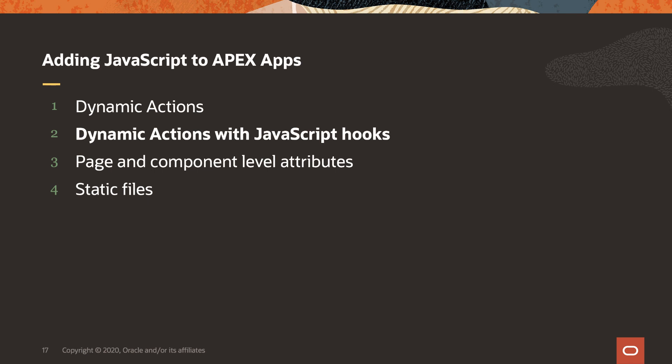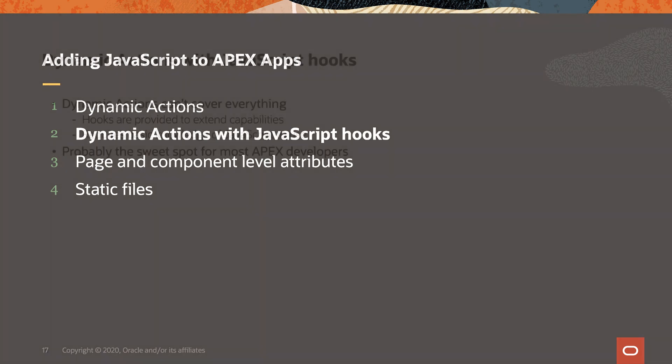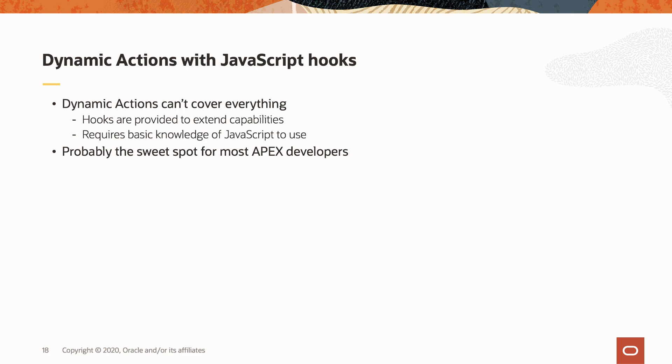That's it for the demo in this module. From here on out, I'll talk you through the concepts, starting with dynamic actions with JavaScript hooks. The creators of the dynamic action framework knew that a declarative system could never encapsulate everything one could do with JavaScript code. So they provided various hooks to extend the capabilities of the framework, provided folks knew how to leverage them. For me, this is probably the sweet spot for most Apex developers. Once you know how to create dynamic actions using a little bit of JavaScript here and there, you'll probably be able to deliver on the majority of requirements you're given.